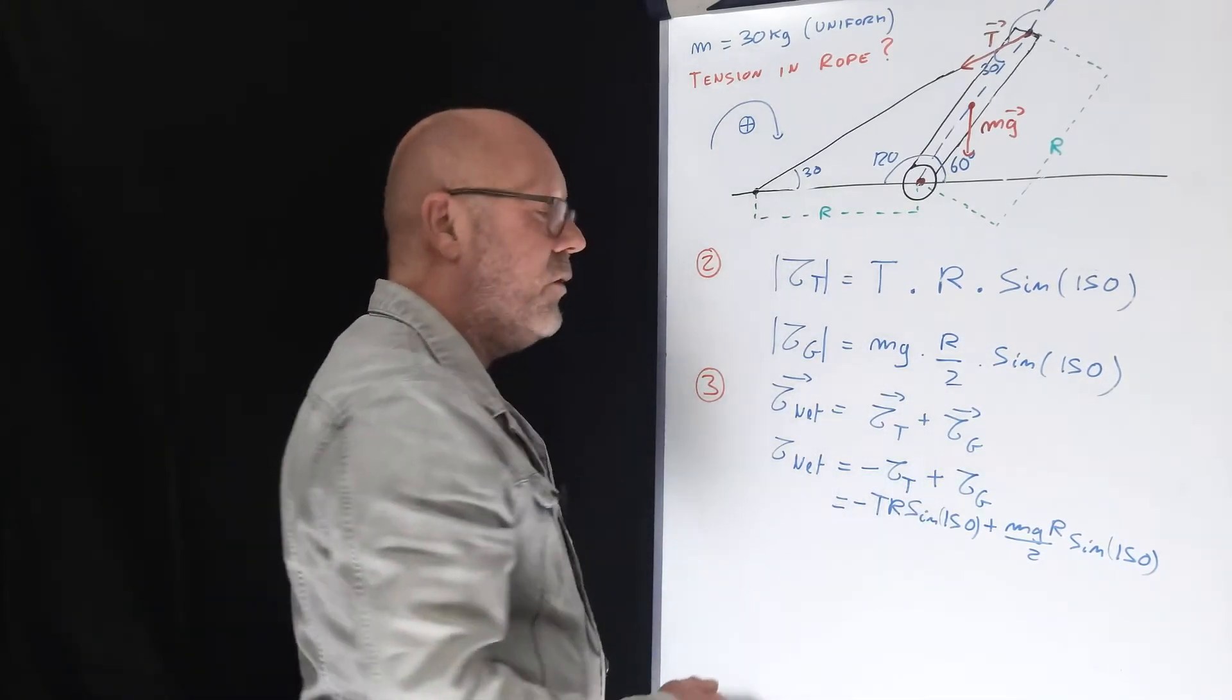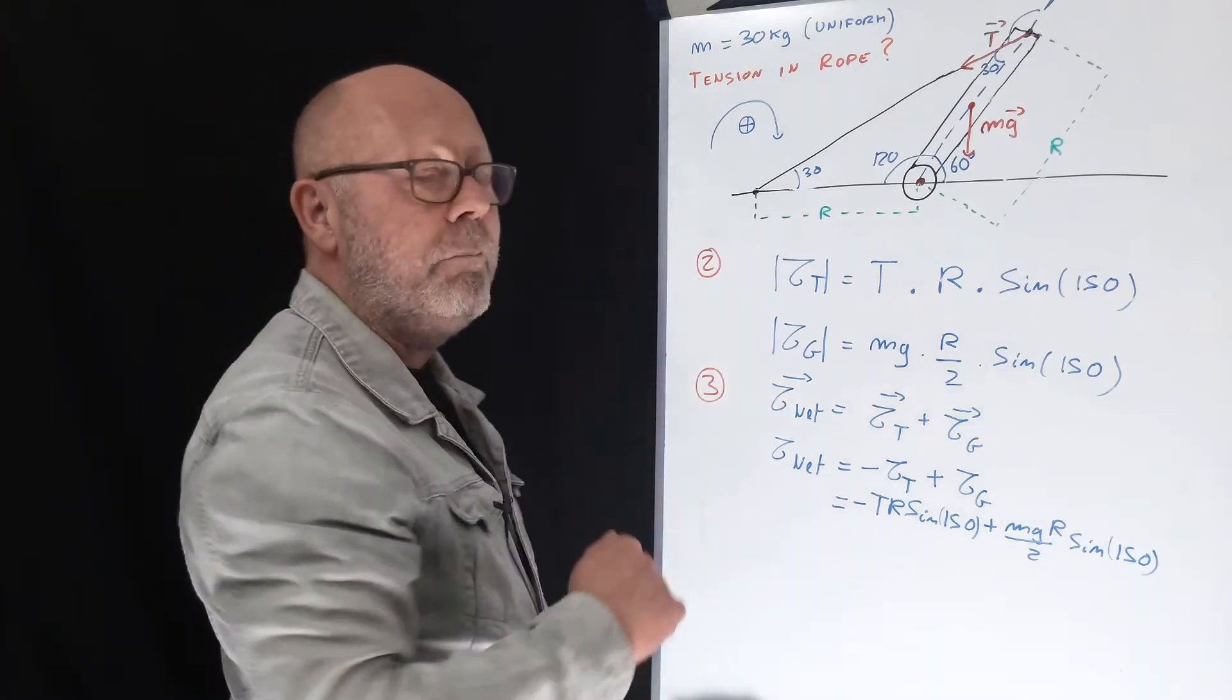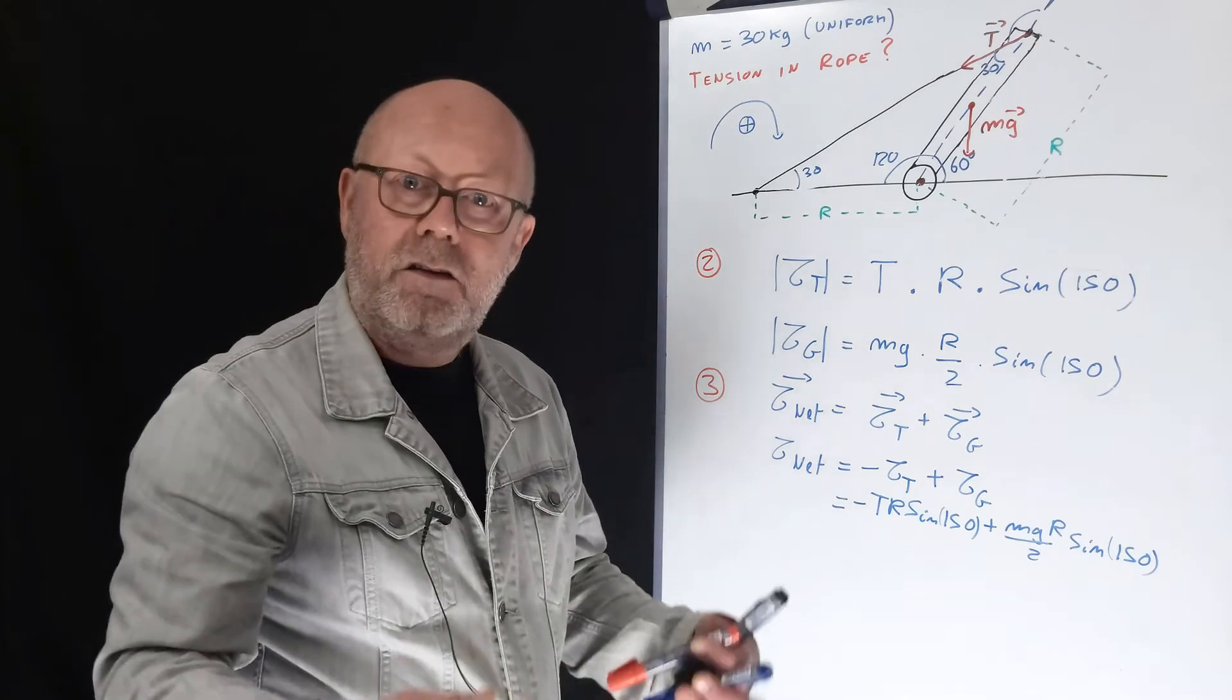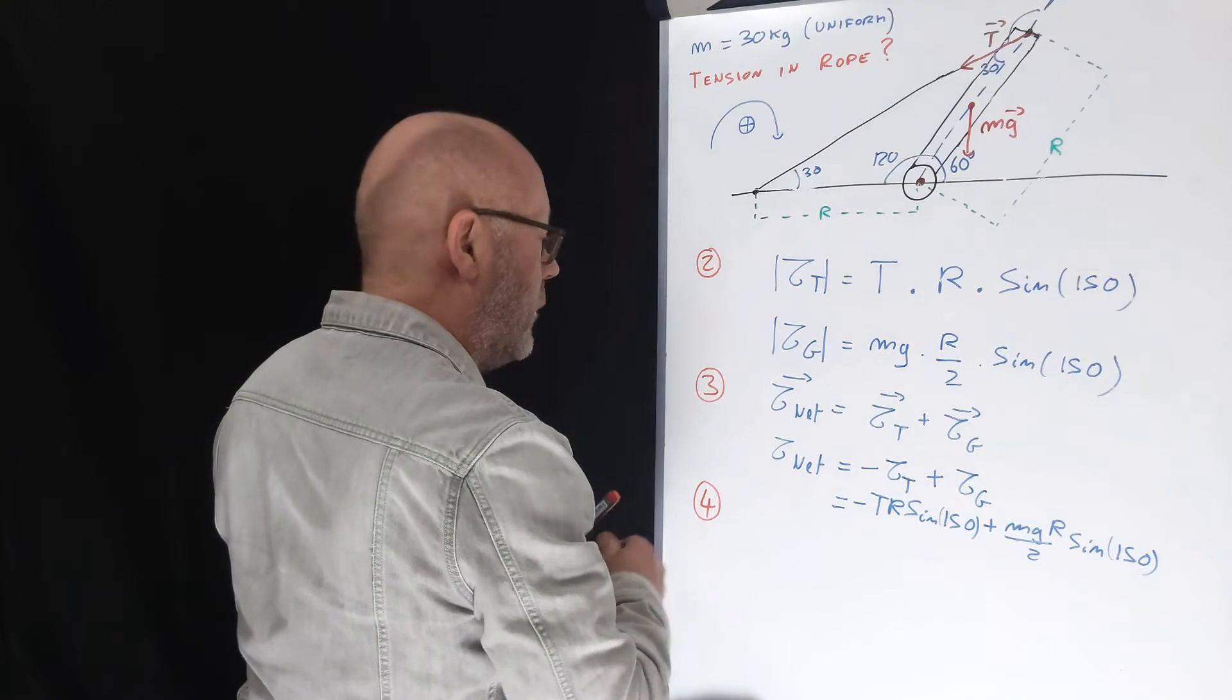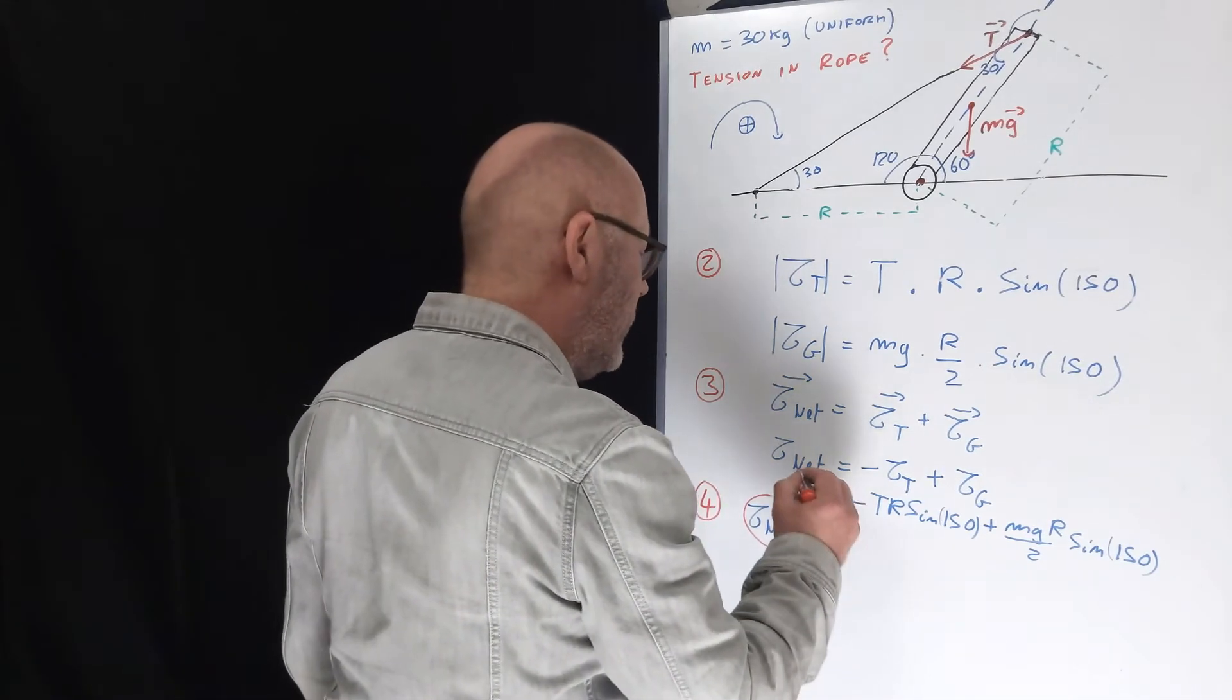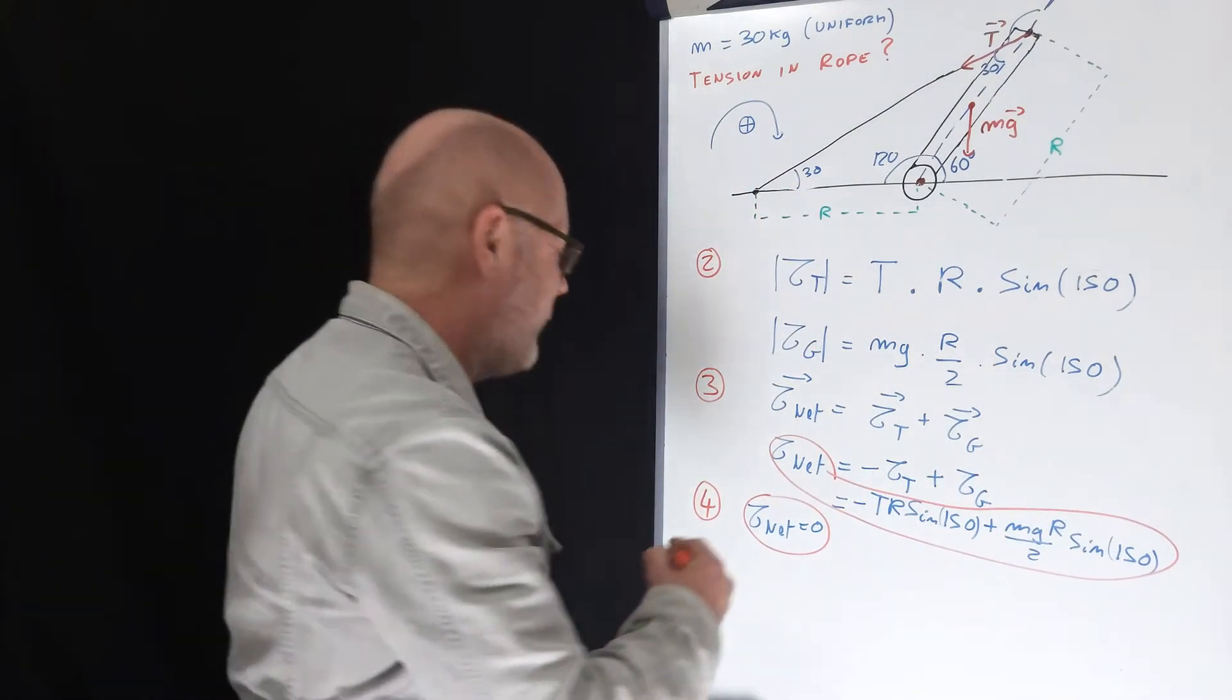Now that we have an expression of our net torque, we can move on to the next step. Step 4, which is to apply Newton's laws. The plank is in balance. It's not rotating. Therefore there is no angular acceleration on the plank. That means that the net torque is zero. Step 4 corresponds to writing down Tor net equals zero. Now we have our two expressions. We can go now to step 5, which is to solve.